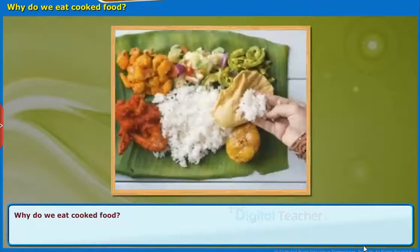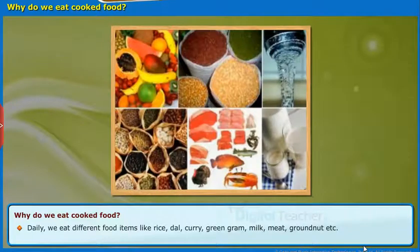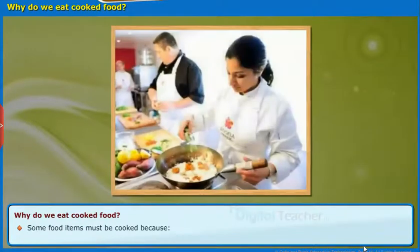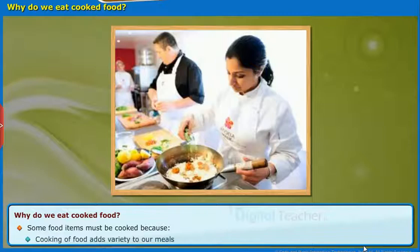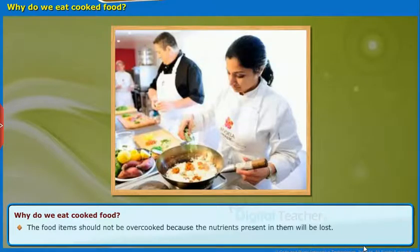Now let us know why it is advised to eat cooked food. Daily we eat different food items like rice, dal curry, green gram, milk, meat, groundnut, etc. Out of these, some are eaten after cooking and some others are eaten directly without cooking, that is, raw. Some food items must be cooked because cooking makes food easy to digest, adds variety to our meals, makes food safe, and improves the appearance, flavor, color, and taste of food. The food items should not be overcooked because the nutrients present in them will be lost.